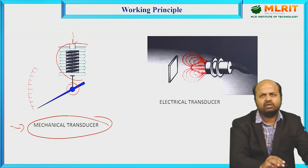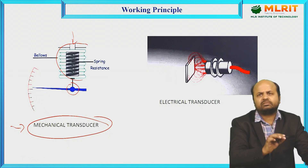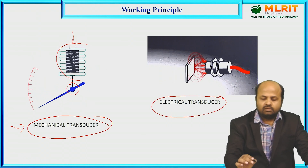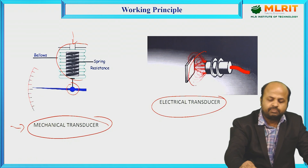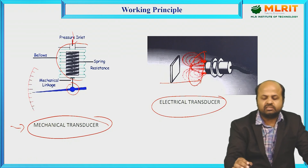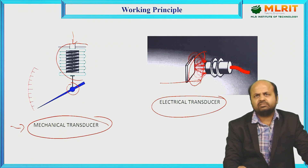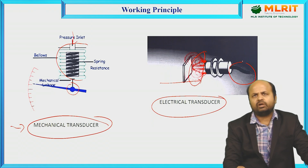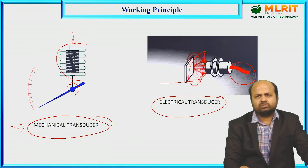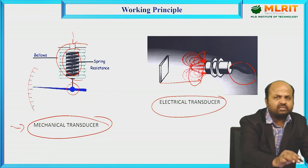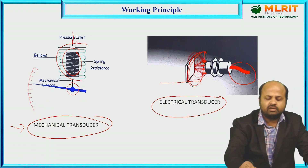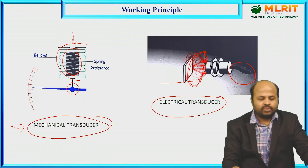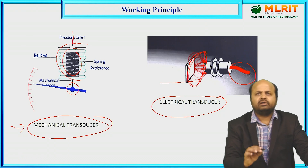In a mechanical transducer, we get the output as mechanical displacement. For an electrical transducer, a magnetic field is generated by some device, and whenever an object comes near this magnetic field and cuts it, an electric pulse is generated automatically. In a mechanical transducer, we can use a spring as a transducing element; in an electrical transducer, we can use an electric or magnetic field for detecting objects.